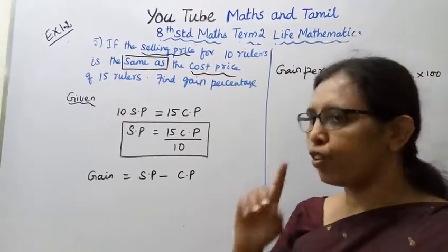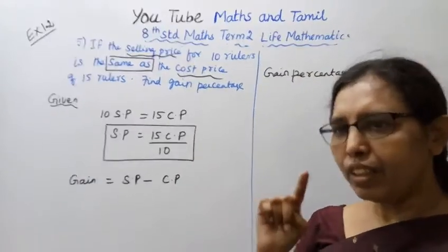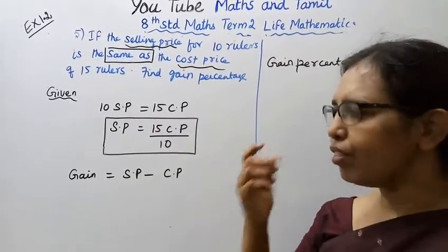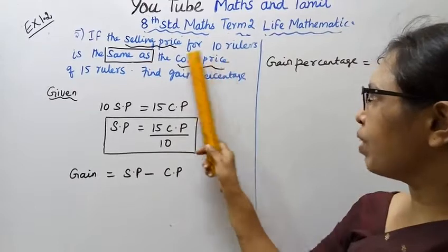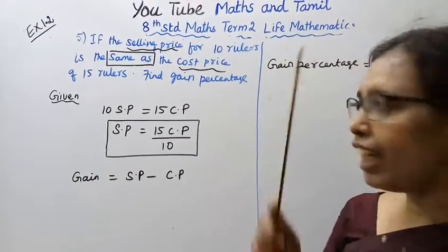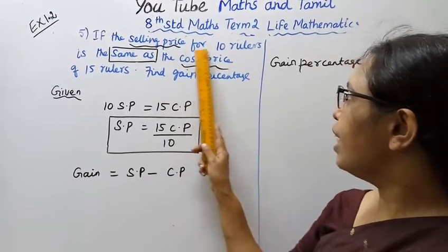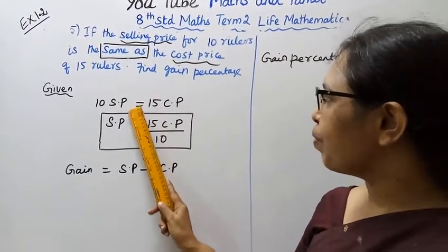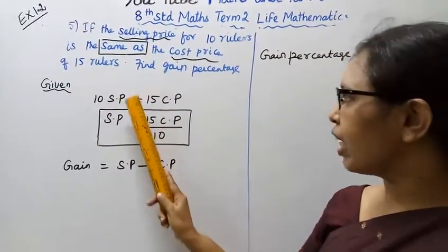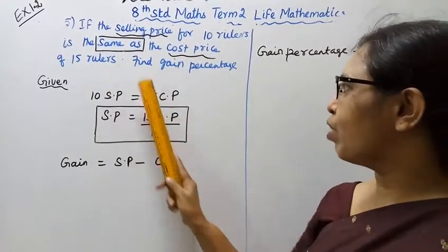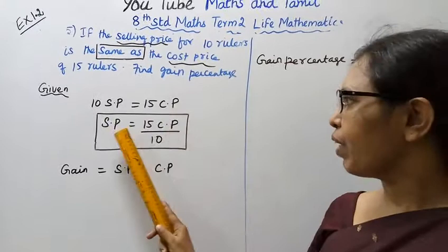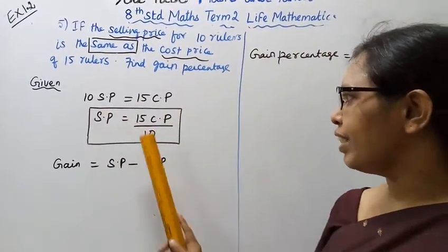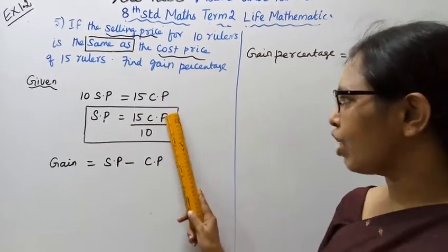Gain percentage — the formula is gain divided by CP, into 100. The selling price of 10 rulers is the same as the cost price of 15 rulers, so selling price equals 15 times cost price divided by 10.